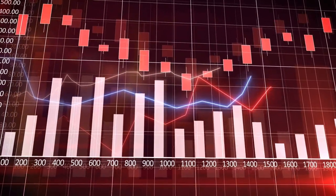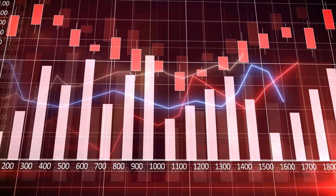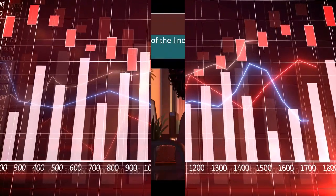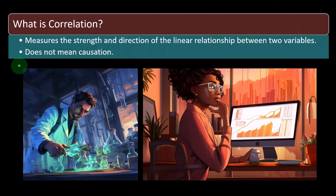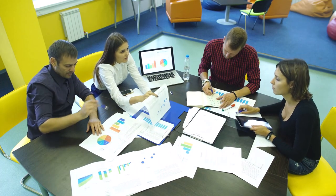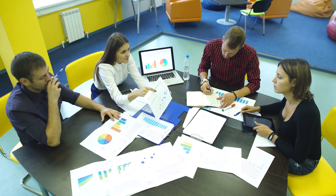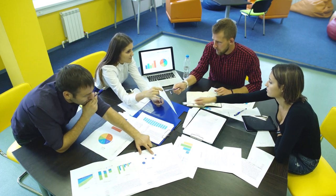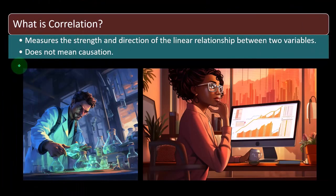Now we're thinking about two data sets — or possibly more in some circumstances — but we're starting with two data sets to see if there's some kind of relationship between them, thinking about that relationship as a mathematical one. In other words, are the dots in the different data sets moving together in some way, shape, or form?